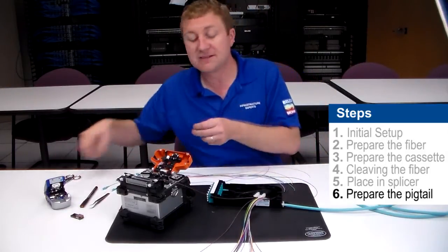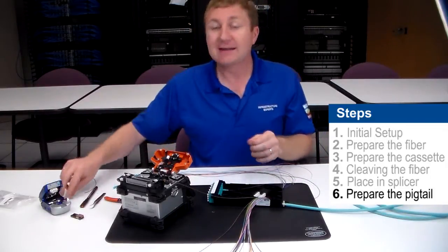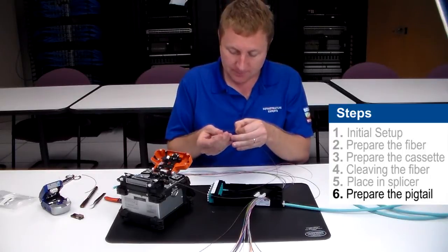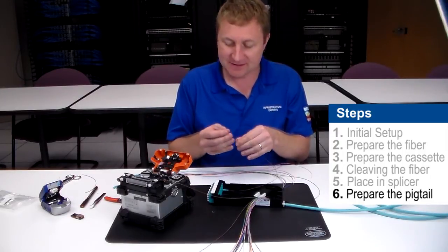I want to make sure that that fiber is nice and loose in the slack manager and that we're not putting any tension on. So I'm going to want to make sure I install my shrink tube before we do our splice. We're going to slide this over the end.